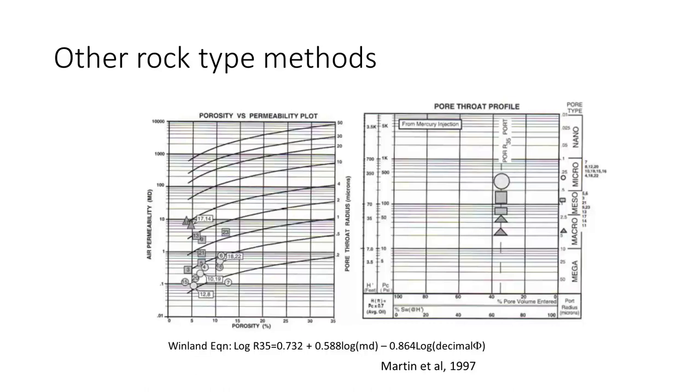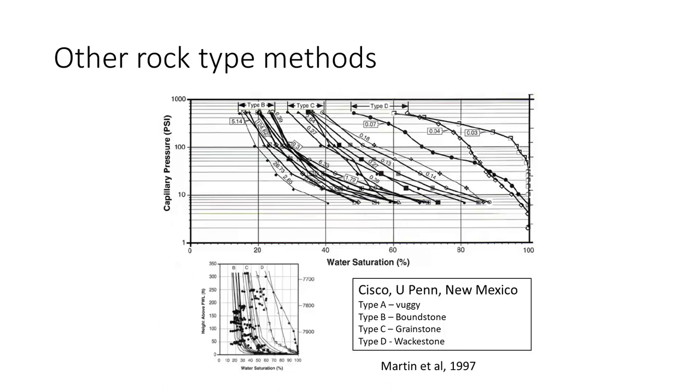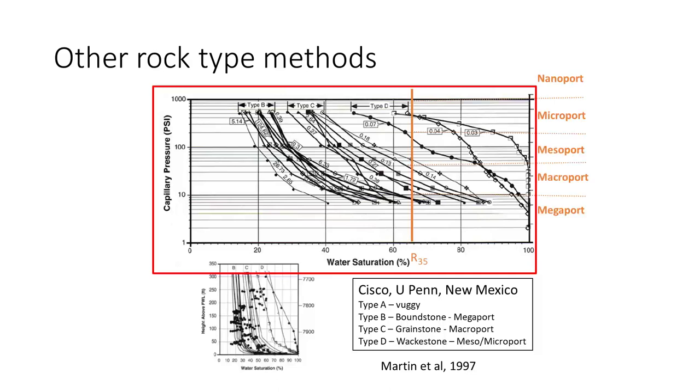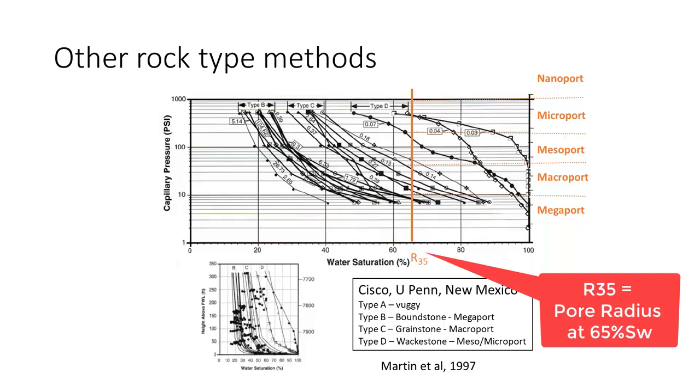Looking at cap pressure data might be another way of looking at this. You can see the data down there on the saturation versus the height above free water level. If you put that on a log scale, you have the plot above, and then you can use the R35, which is the Winland definition, to define the rocks that lie to the left - essentially that line would be the megapore. Then you can also define a cluster which is macropore, mesopore, and micropore. This was done for a US carbonate.